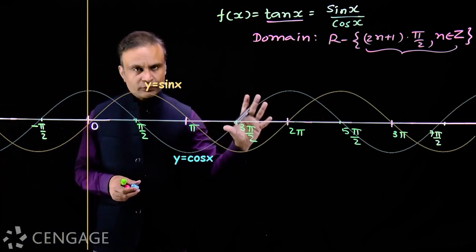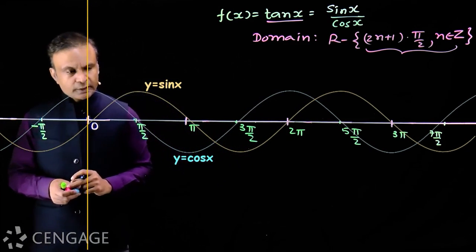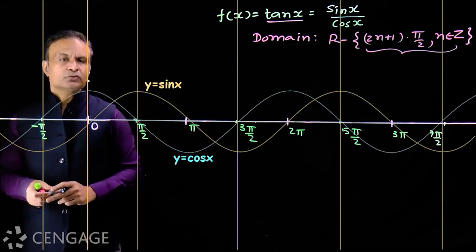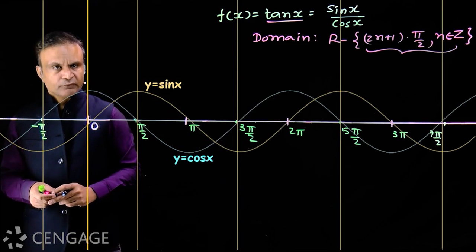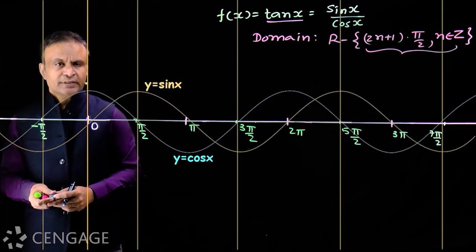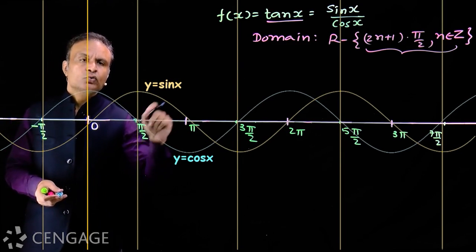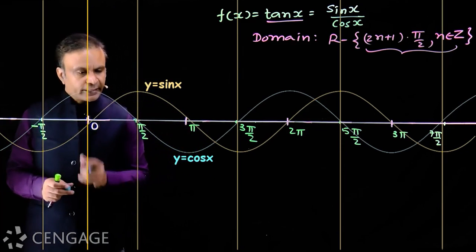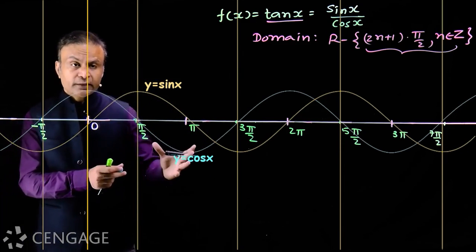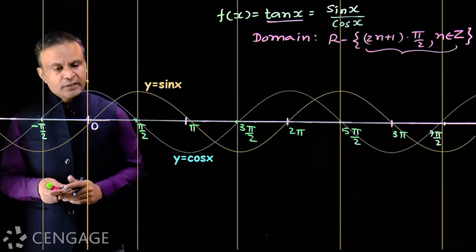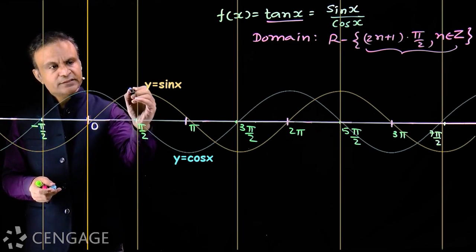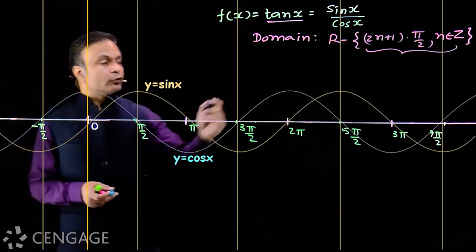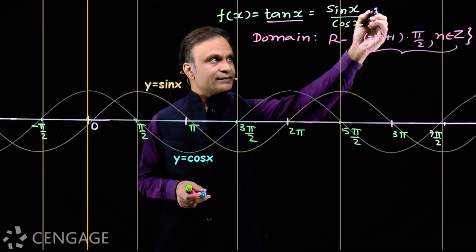Now consider the first quadrant, where x belongs to the open interval (0, π/2). We cannot take x = π/2. In this interval, sin x increases from 0 to 1 and cos x decreases from 1 to 0. So the numerator is increasing while the denominator is decreasing as x increases.